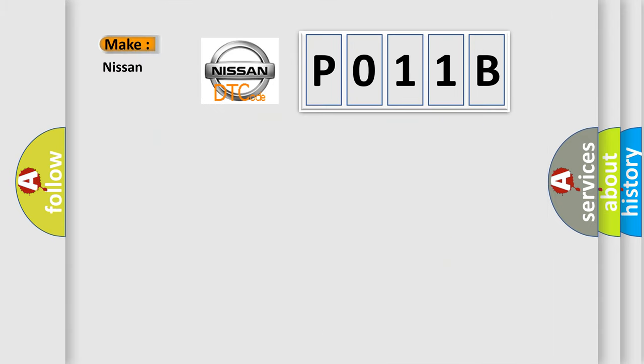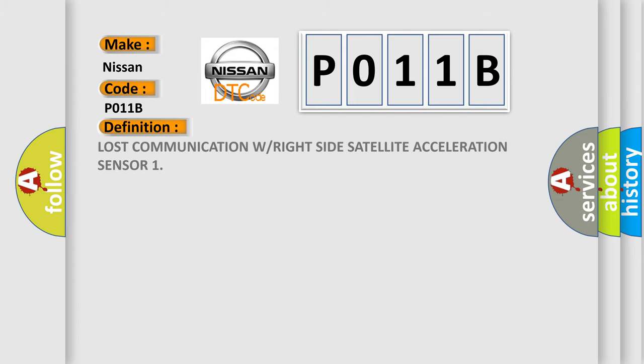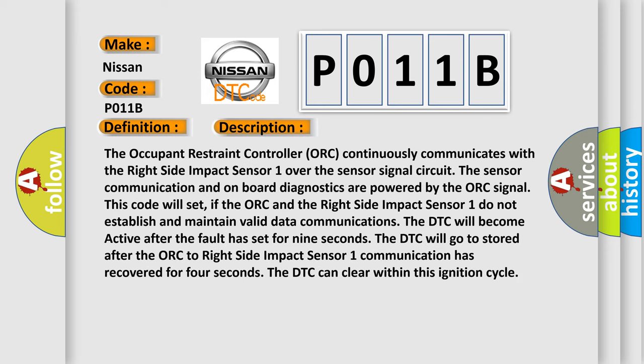So, what does the diagnostic trouble code P011B interpret specifically for Nissan? The basic definition is: Lost communication with the right-side satellite acceleration sensor. The occupant restraint controller (ORC) continuously communicates with the right-side impact sensor 1 over the sensor signal circuit. The sensor communication and onboard diagnostics are powered by the ORC signal. This code will set if the ORC and the right-side impact sensor 1 do not establish and maintain valid data communications. The DTC will become active after the fault has set for 9 seconds, and will go to stored after the ORC to right-side impact sensor 1 communication has recovered for 4 seconds.